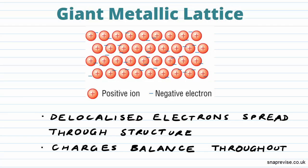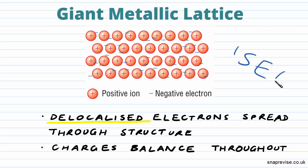In metals we have something called delocalised electrons and they're spread throughout the structure. What we mean by that is the electrons are completely free to move — they're not localised, they're not bound to these positive ions. The negative electrons can flow throughout the structure, and that's why you'll sometimes hear the metallic lattice described as a rigid lattice of positive ions with a sea of delocalised negative electrons.